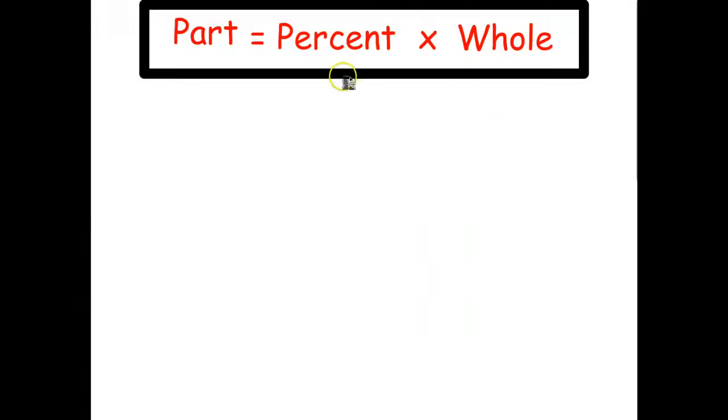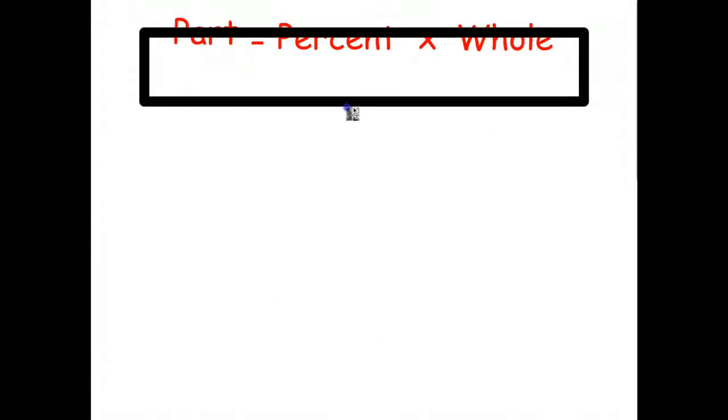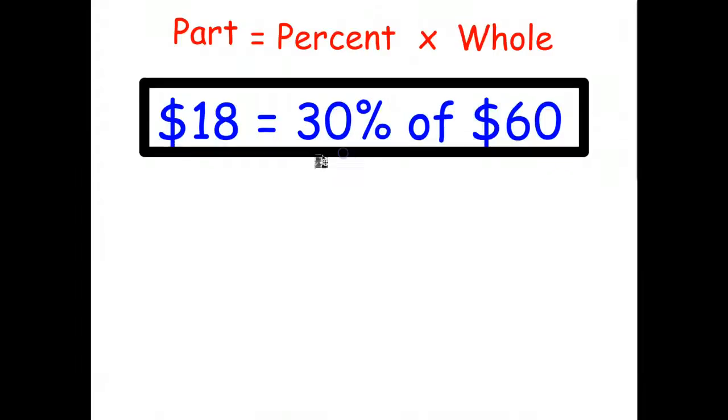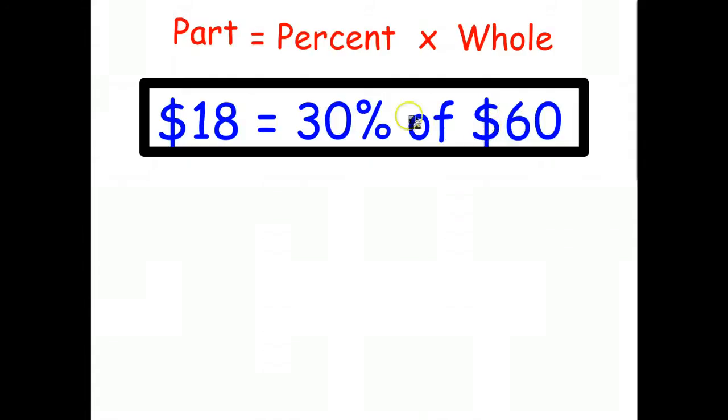So here's our basic formula: part equals percent times whole. For example, $18 is the part, the percent is 30 percent, and the whole amount in this case is $60. And we just have to multiply 0.3 times 60 to work out the part.